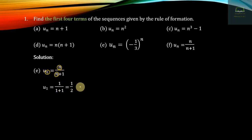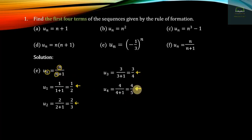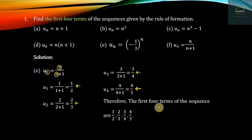For u_n = n divided by n plus 1: u1 = 1 divided by 2, u2 = 2 divided by 3, u3 = 3 divided by 4, u4 = 4 divided by 5. The first four terms of the sequence are 1/2, 2/3, 3/4, and 4/5.